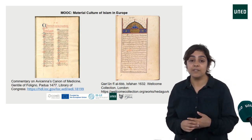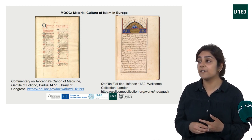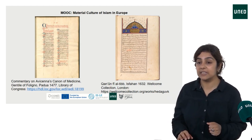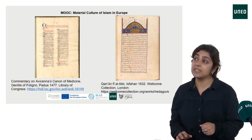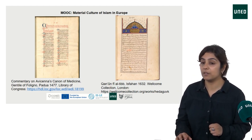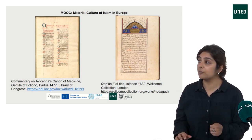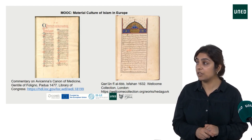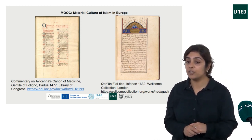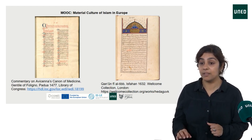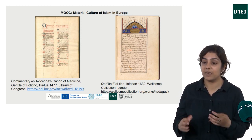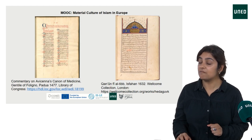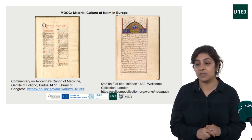How does he do this? Avicenna divided his material into five books, each subdivided into chapters known in Arabic as Fassal or Fun and in Latin as Fen. What we see on the screen are two images from two manuscript copies of the Qanun Fi Al-Tib, the Canon of Medicine. On the right, we see an image from a 17th century Persian manuscript made in Isfahan, which is an opening page of book three — a book about diseases of the brain.